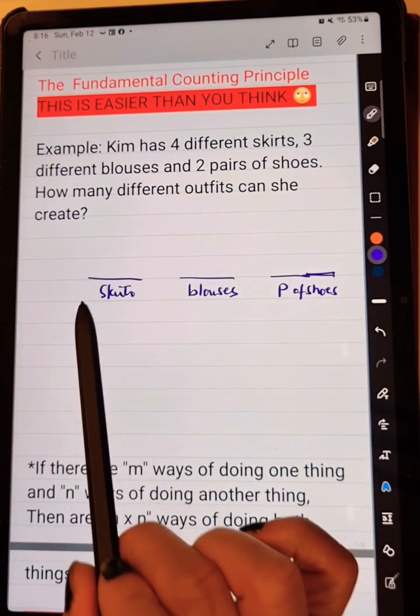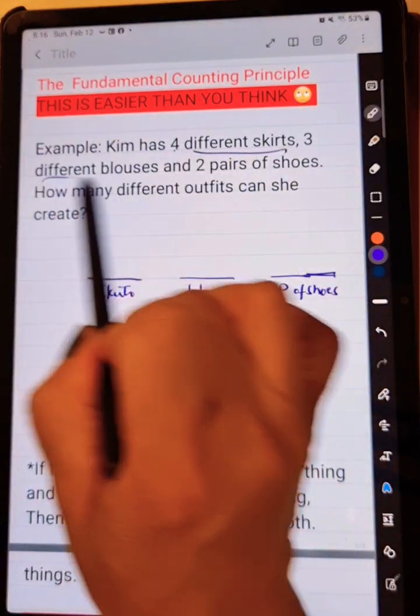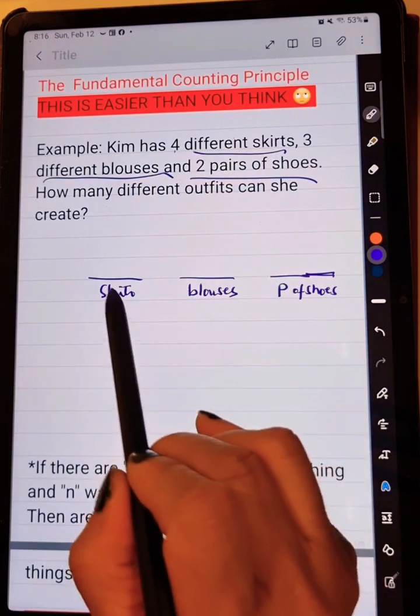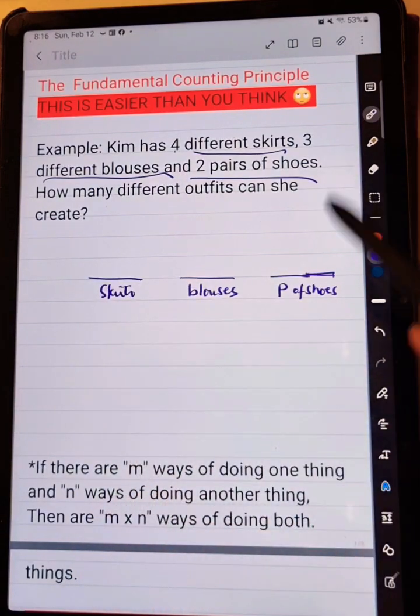So what I'm going to do is, since we have here skirts, blouses, and pair of shoes, we're going to make a line like this. And first one, that is for skirts, blouse, and shoes.